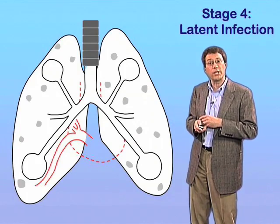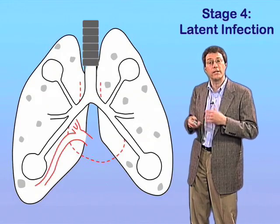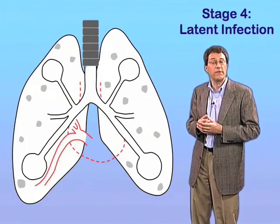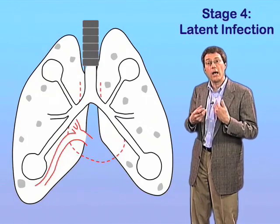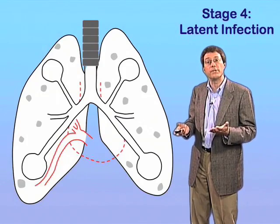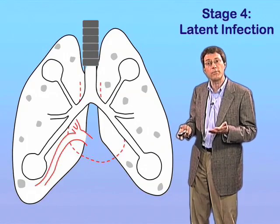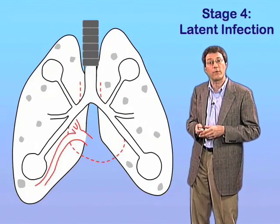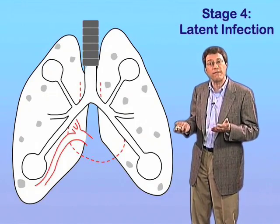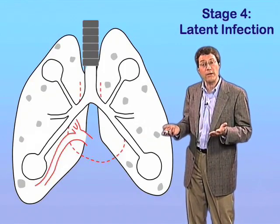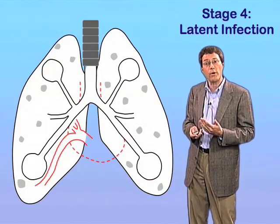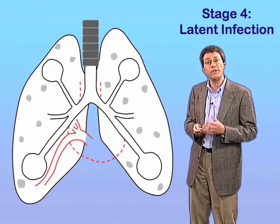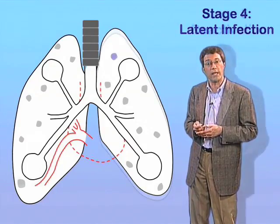Latent infection can last a lifetime. In old studies from the early 20th century, it was shown that latently infected individuals who died of other causes would yield viable tubercle bacilli upon culture of lung homogenates. We know that the tubercle bacillus, once it has infected you, is capable of persisting for a lifetime. Most of those infections will remain latent throughout the individual's life, but in a minority of cases — about 5% to 10% over the course of a lifetime — individuals with latent TB infection will reactivate.